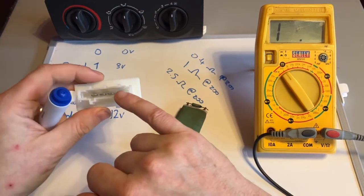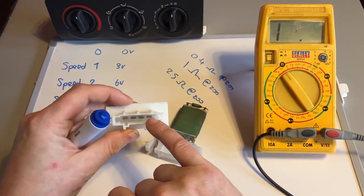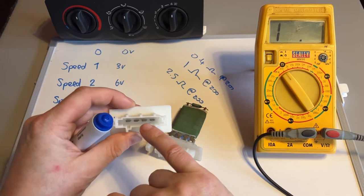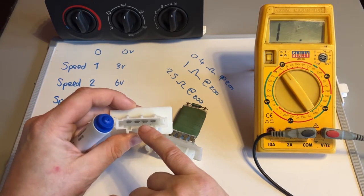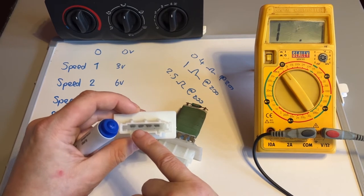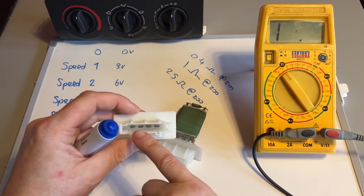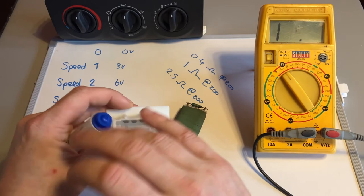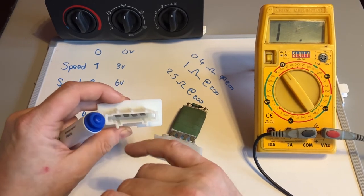So look at it. This one here is giving the least resistance, so that will be speed four. The middle one is giving the highest resistance, so that will be speed one. And then the first one that I touched is showing one ohm of resistance, so that will be speed two. The more resistance, the less current and voltage is allowed through, the slower the motor will go.